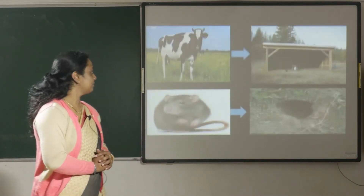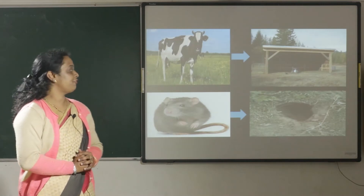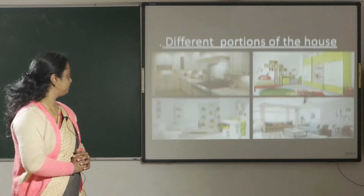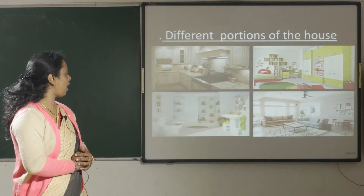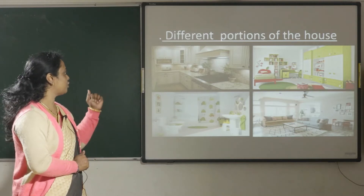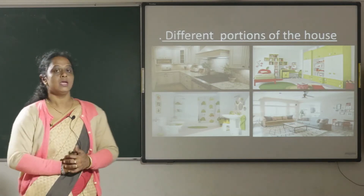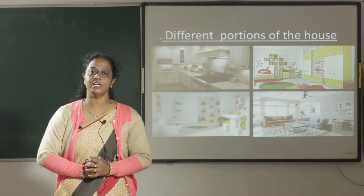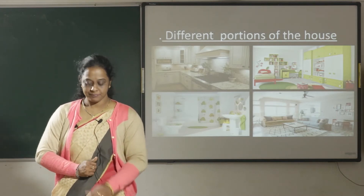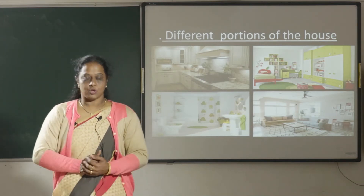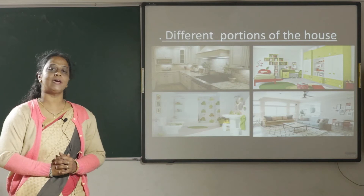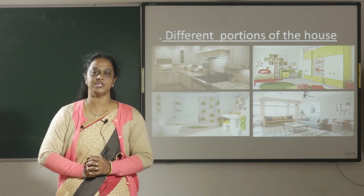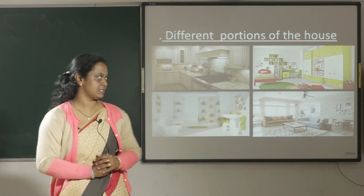Now let's see the different portions of the house. Which are the different portions of a house? Kitchen — the kitchen is a room in which food is prepared and cooking is done. Our mother prepares delicious food for us.